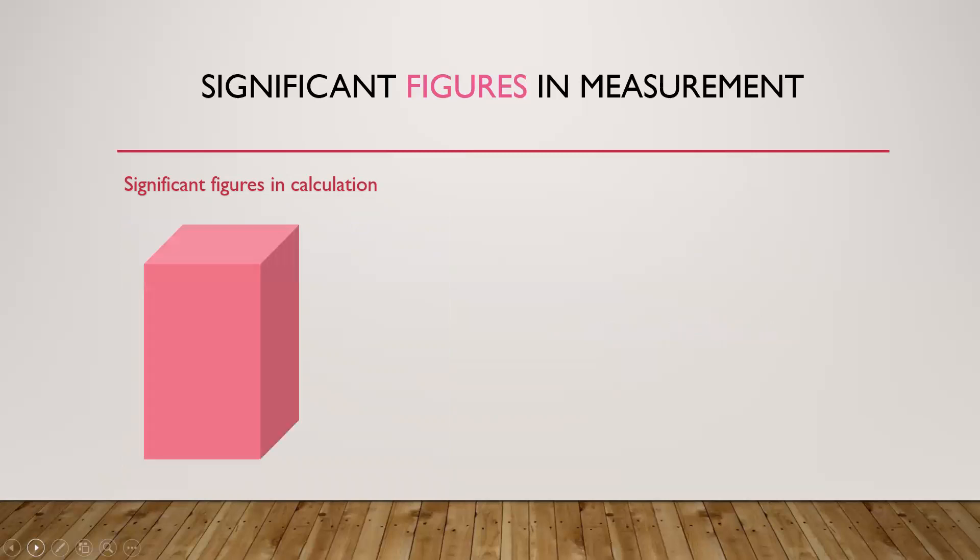Suppose we are told to find the volume of a rectangular prism with dimensions as shown. To find the volume of a rectangular prism, we determine the product of its length, width and height.